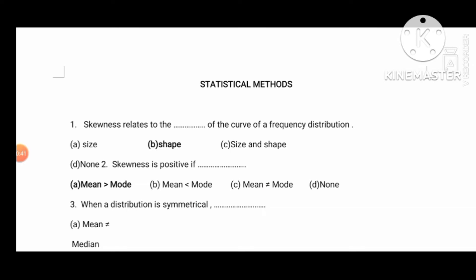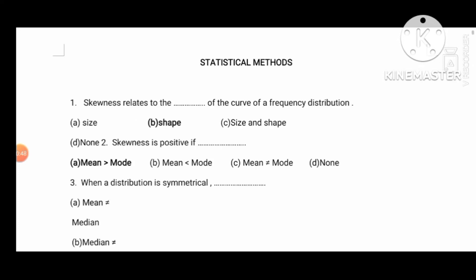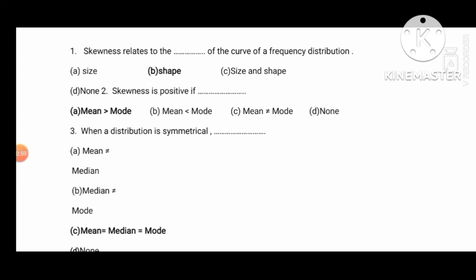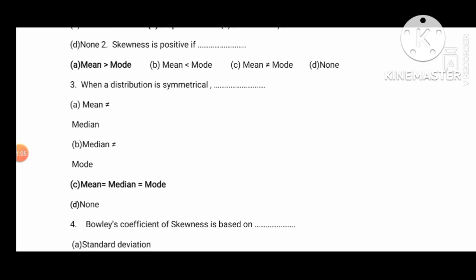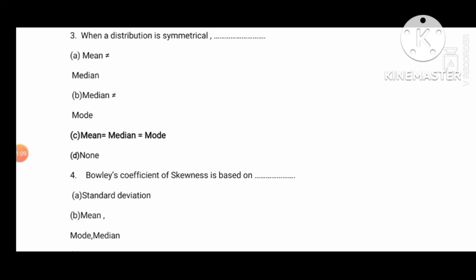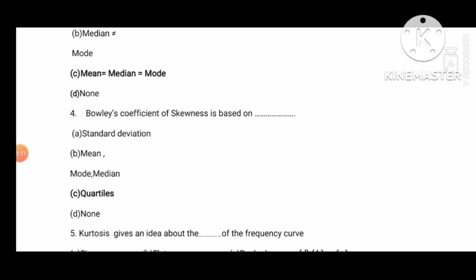First question: QN1 relates to the shape of the curve of your frequency distribution. Second question: QN2 is positive if the skewness is positive, and the mean is positive. Third one: when the distribution is symmetrical, mean is equal to mode. And the Bowley's coefficient of skewness is based on quartiles.